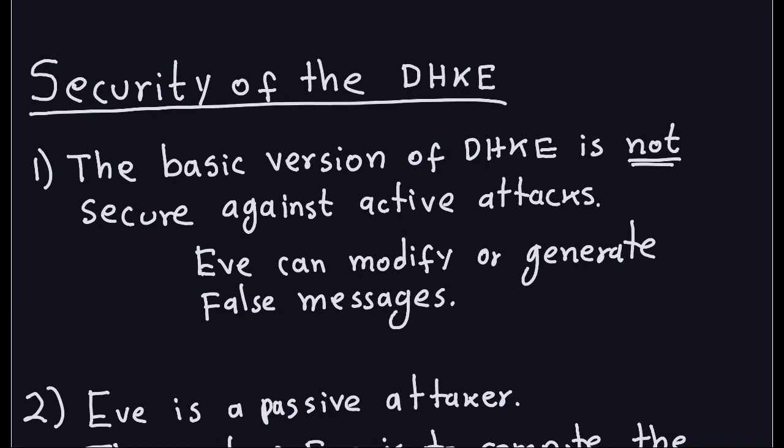The first thing I'm going to mention is that the basic version of Diffie-Hellman is not secure against active attackers. Active attackers are those who want to change the message or change the ciphertext. If the attacker can modify or generate full messages, the Diffie-Hellman key exchange has no way to check whether the message was originally sent by the person who is supposed to be sending it.